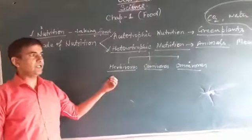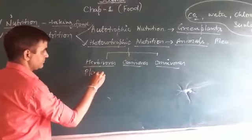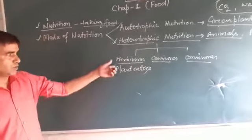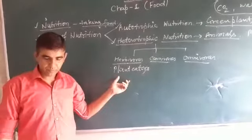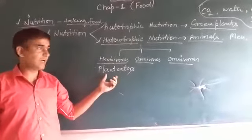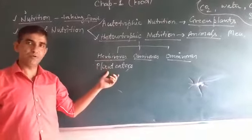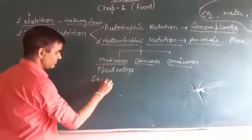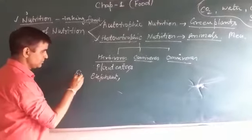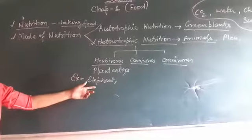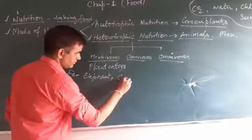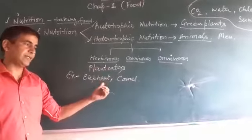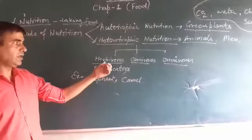Talking about herbivorous — these are plant eaters. The animals which eat only plants are called herbivorous. Examples include elephant and camel. These animals depend only and only on plants for their food.